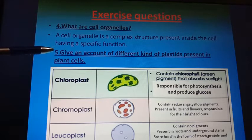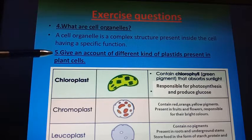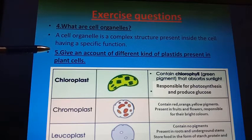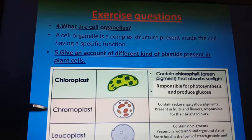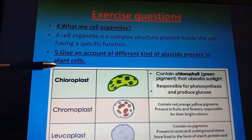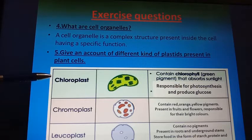Give an account of the different kinds of plastids present in plant cells. There are three types of plastids present in plant cells. First is chloroplast, which contains chlorophyll — a green pigment that absorbs sunlight. It is responsible for photosynthesis and produces glucose.